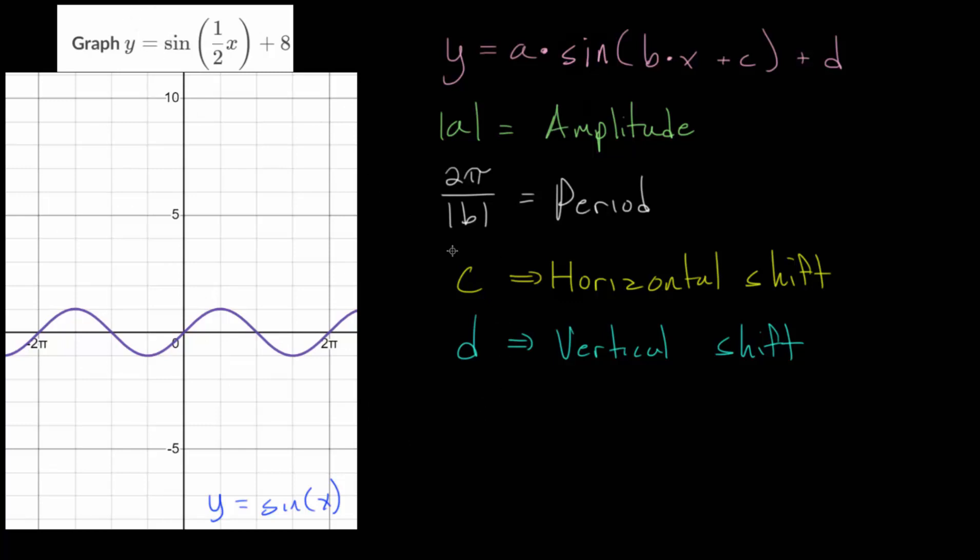And we can see that our a value in this case is simply 1. Since the coefficient on sine on the outside, this vertical scaling factor, is just 1. If you don't see it, we can assume it's just 1.